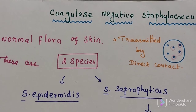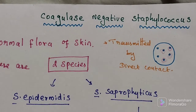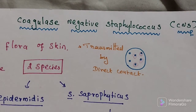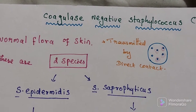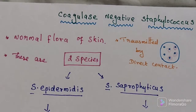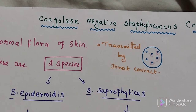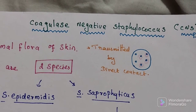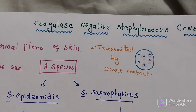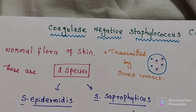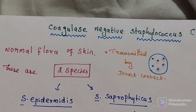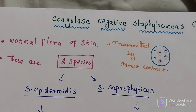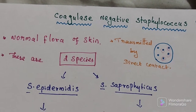In this video, we will discuss coagulase-negative staphylococcus. It gives a coagulase test negative result, which is why it has that name. All other strains give coagulase positive results. This one is the normal flora. It will be transmitted through direct contact only.